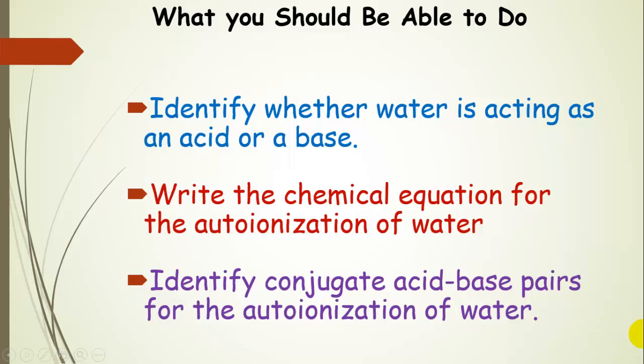So after this discussion, what should you be able to do? You should be able to identify whether water is acting as an acid or a base in a reaction. You should be able to write the chemical equation for the auto ionization of water, and you should be able to identify conjugate acid-base pairs for the auto ionization of water and all of the other reactions that we have discussed.